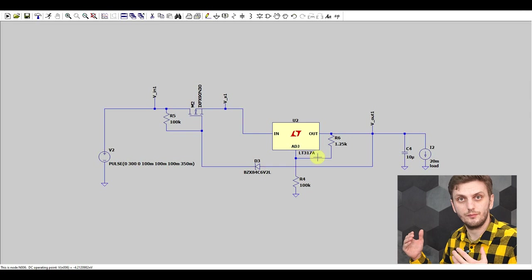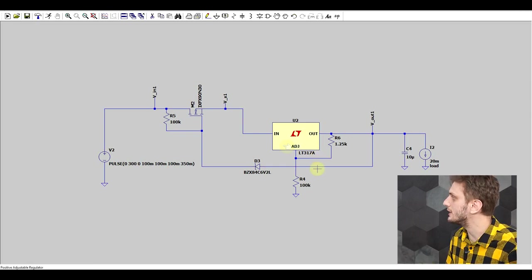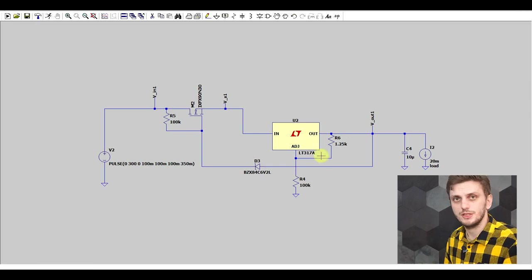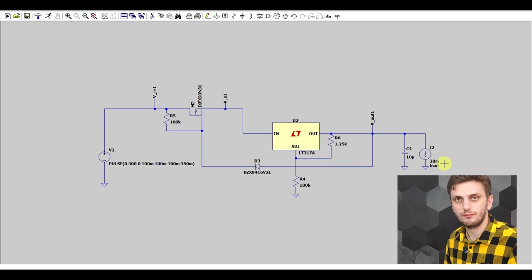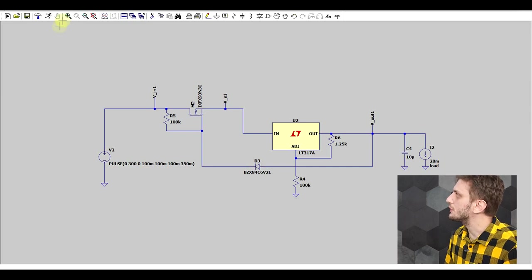Second, as our base regulator, I used the LT317. This simulation model is already built into the simulator. And finally I added a 20 milliamp load, so just so that the circuit has some sort of load to supply its voltage into.